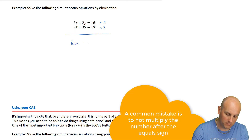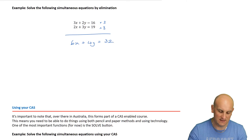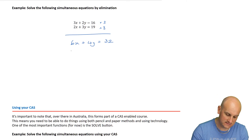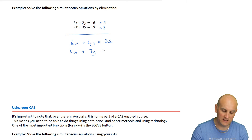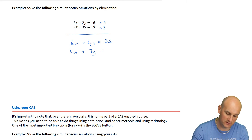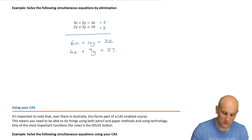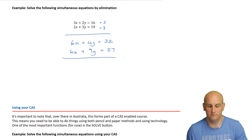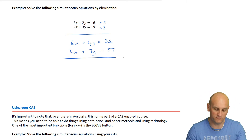So what do I get? 6x plus 4y equals 32. And 6x plus 9y equals 19 times 3: 9, 18, 27 - that gives me 57. So I've almost redefined my question. Draw a line - Pavlov's dog. Very good.